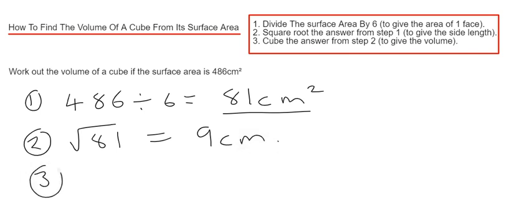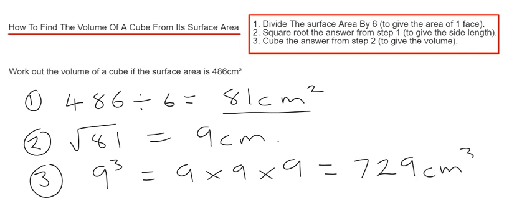And then step three, we just need to cube the side length to give us the volume. So 9 cubed is 9 times 9 times 9 and that is 729 cm³.